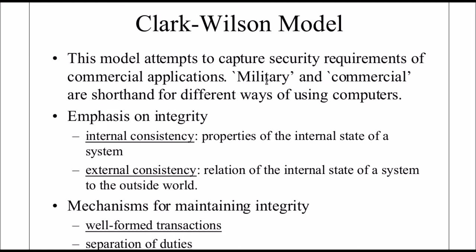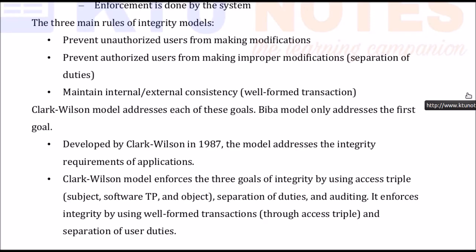In the Clark-Wilson model, integrity is maintained using well-formed transactions and separation of duties. The three main rules of integrity models are: first, prevent unauthorized users from making modifications — this is only addressed by the Biba model; second, prevent authorized users from making improper modifications; and third, maintain internal and external consistency. The Clark-Wilson model addresses all three goals. The second goal is achieved using separation of duties and the third using well-formed transactions.